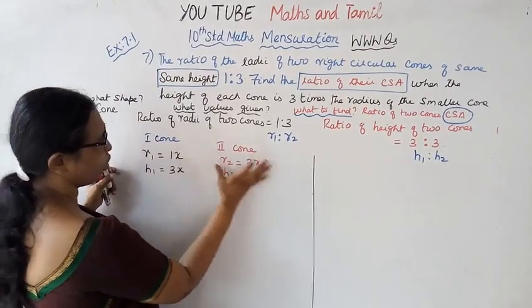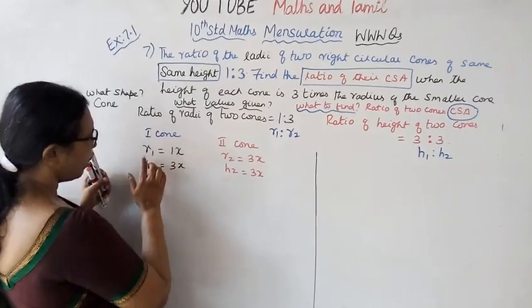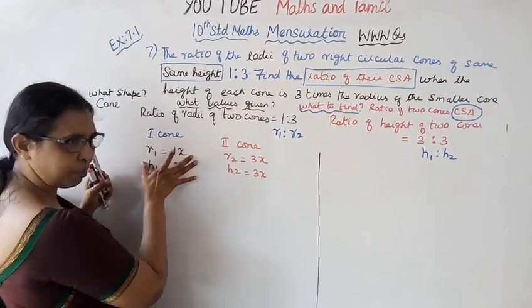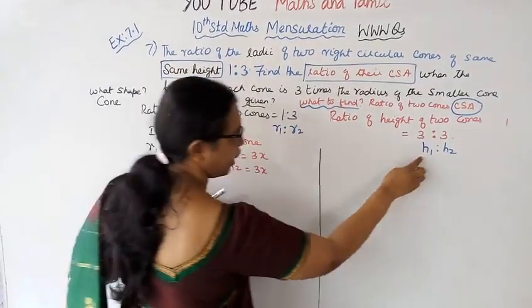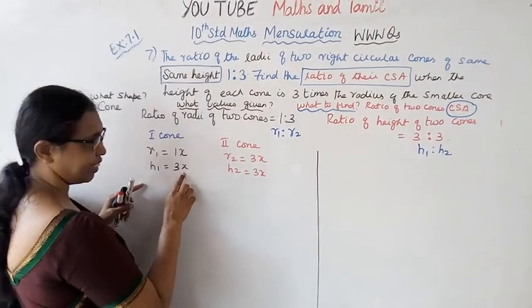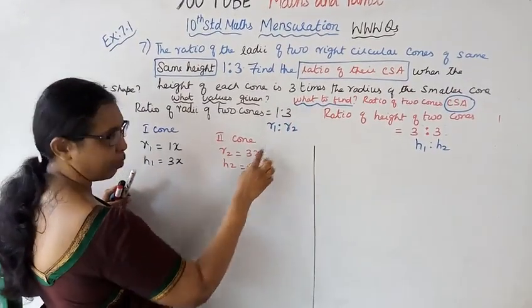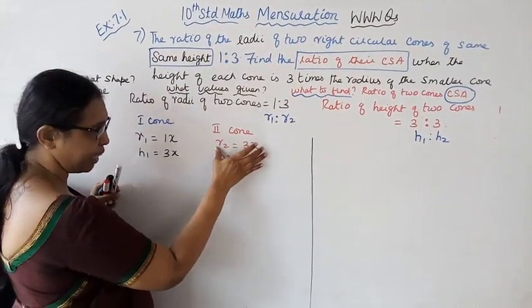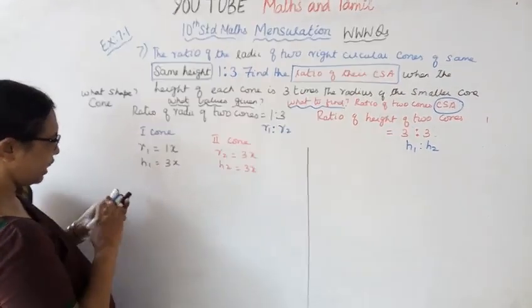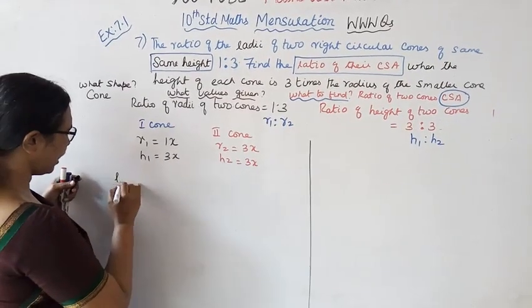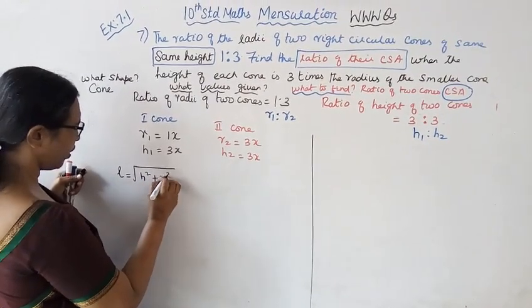First cone: radius R1 is equal to 1x. Since the ratio is 1 is to 3, R1 is 1x and H1 is 3x. Second cone: R2 is equal to 3x, and H2 is also 3x. The ratio of H1 is to H2 is 3 is to 3.